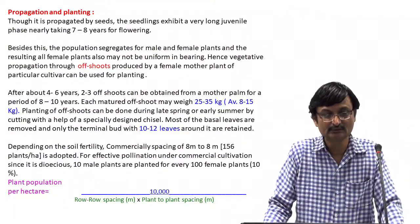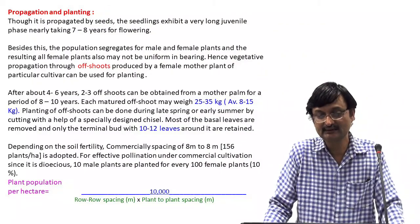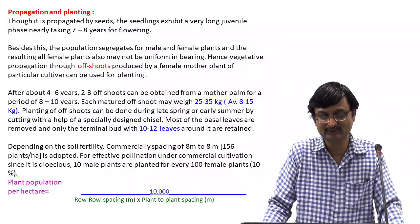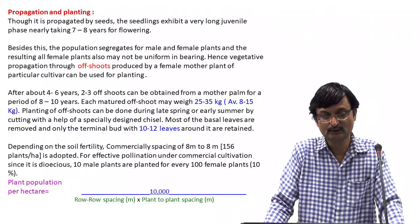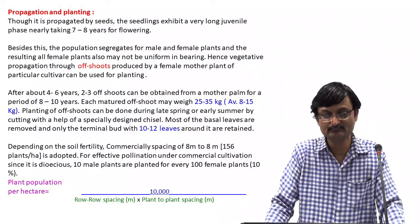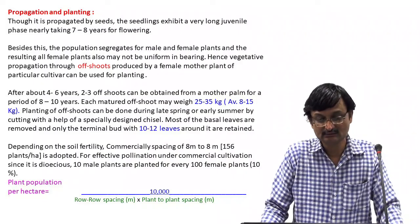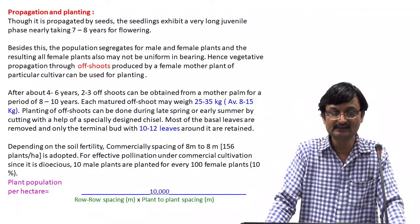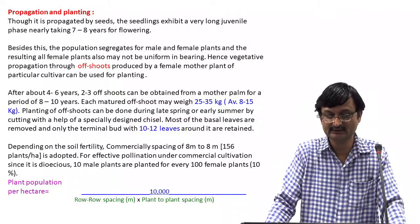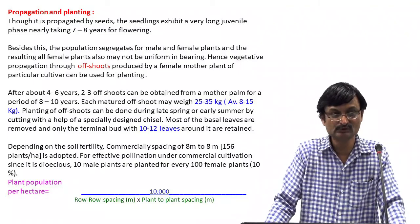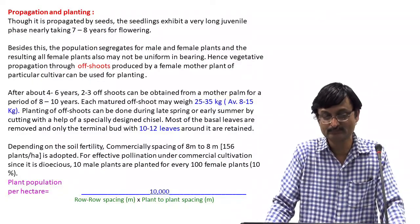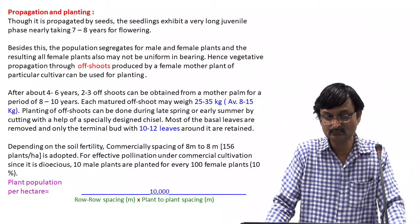Propagation and planting: Although date palm is propagated by seed, the seedlings exhibit a very long juvenile phase, nearly taking 7 to 8 years to flowering. Besides this, the population segregates for male and female plants and the resultant female plants may not be uniform in bearing. Hence vegetative propagation through offshoots — a type of suckers produced by a female mother plant of a particular cultivar — can be used for planting. After 4 to 6 years, 2 to 3 offshoots can be obtained from a mother palm over a period of 8 to 10 years.